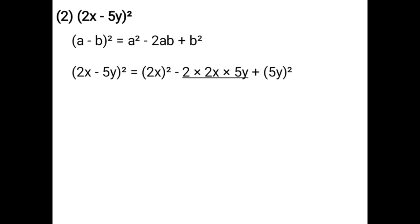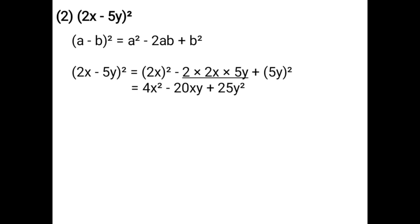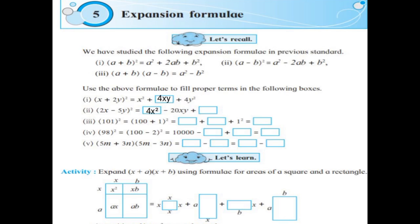Square of 2x is 4x². Then 2 × 2x × 5y: 2 × 2 = 4, 4 × 5 = 20, so that gives −20xy. Plus (5y)² is +25y², since square of 5 is 25 and square of variable y remains the same. The correct answer in the box is 4x² − 20xy + 25y².